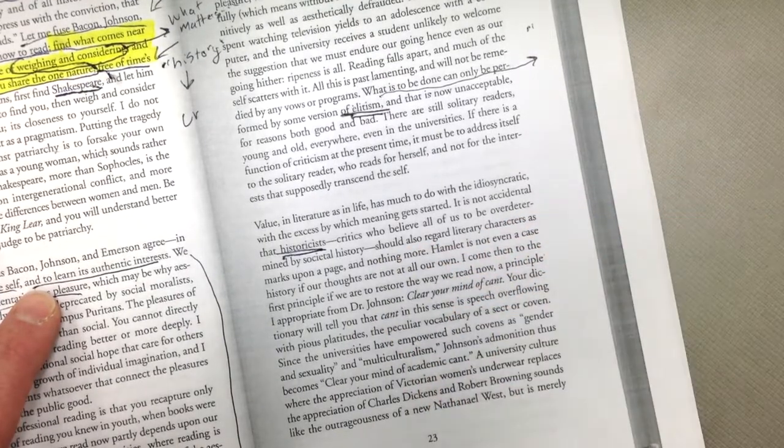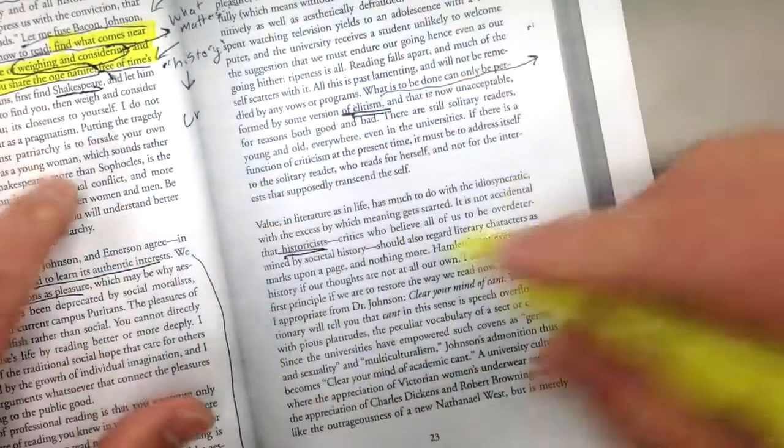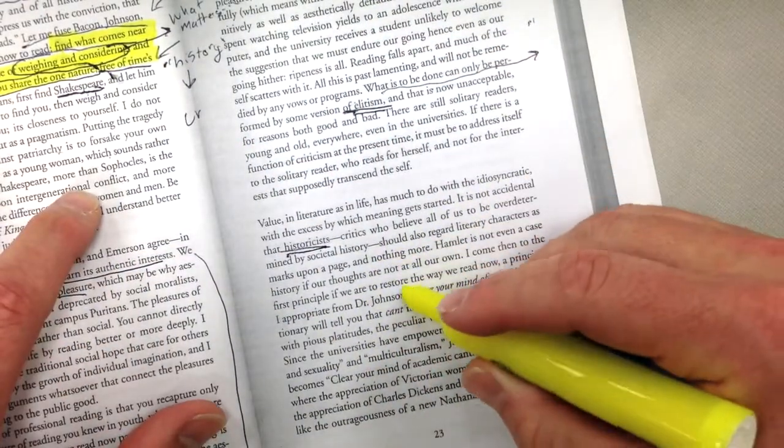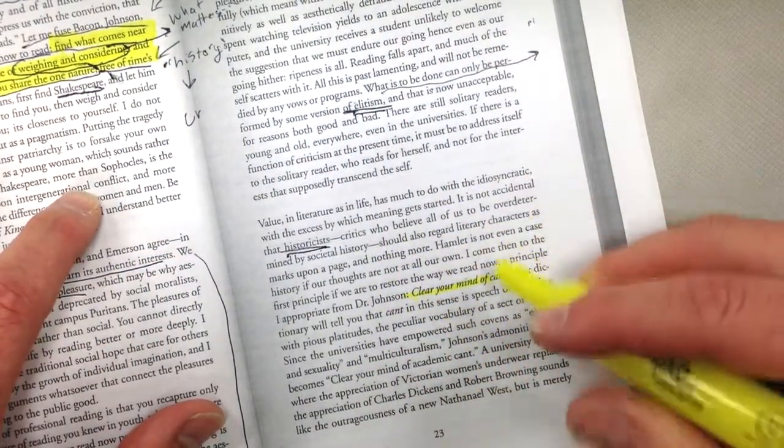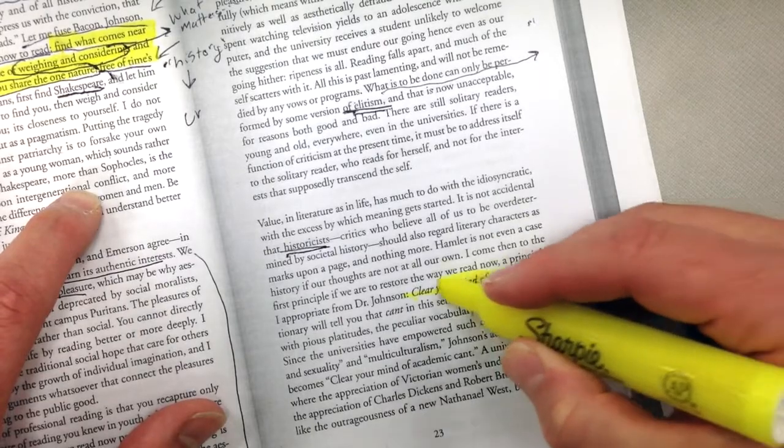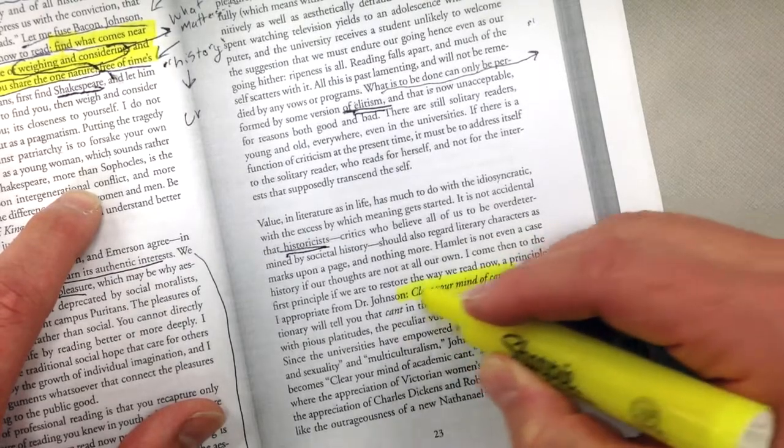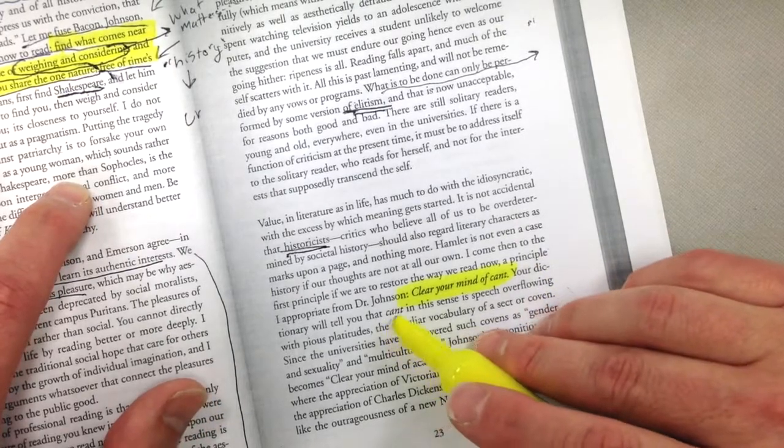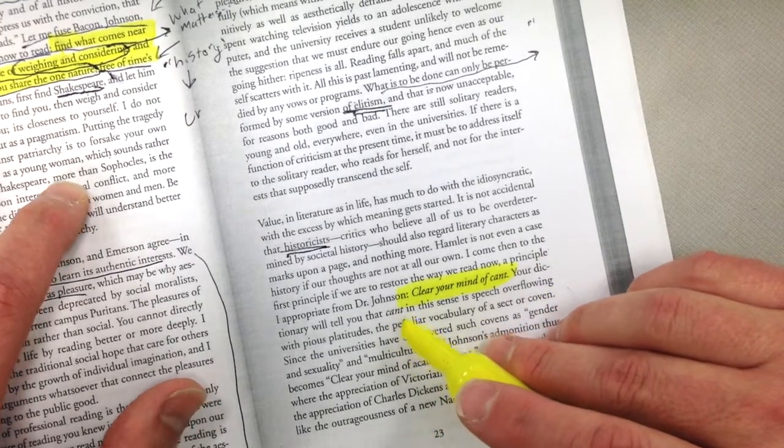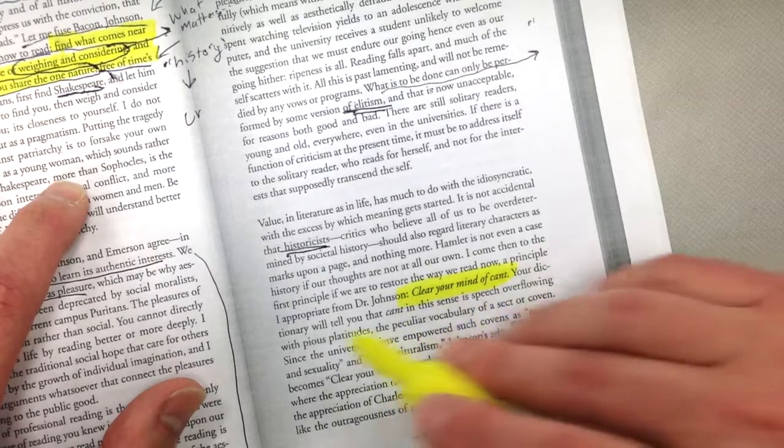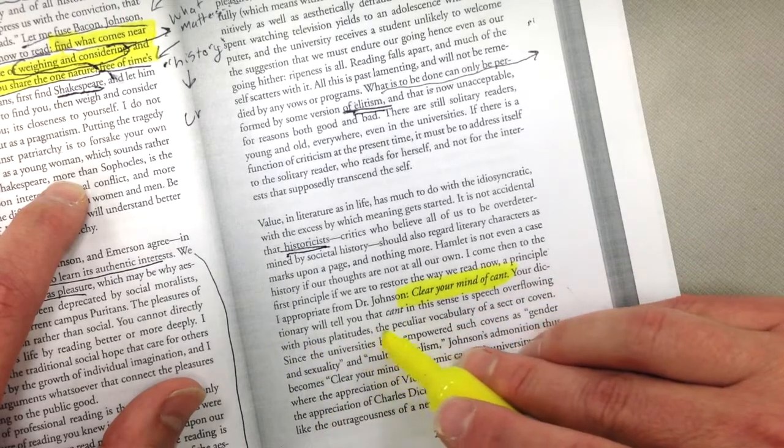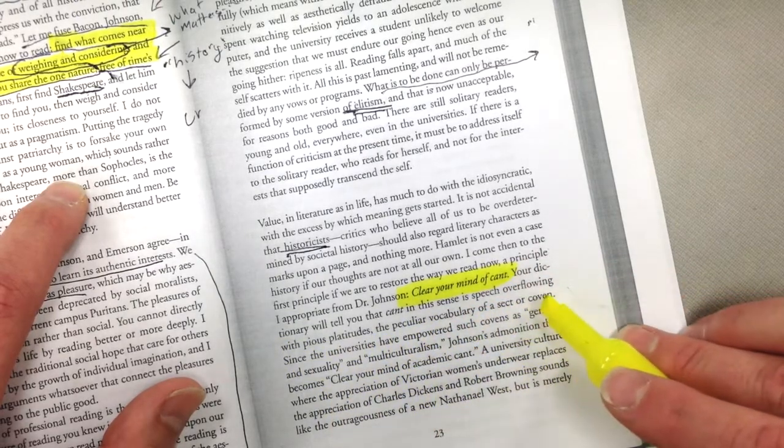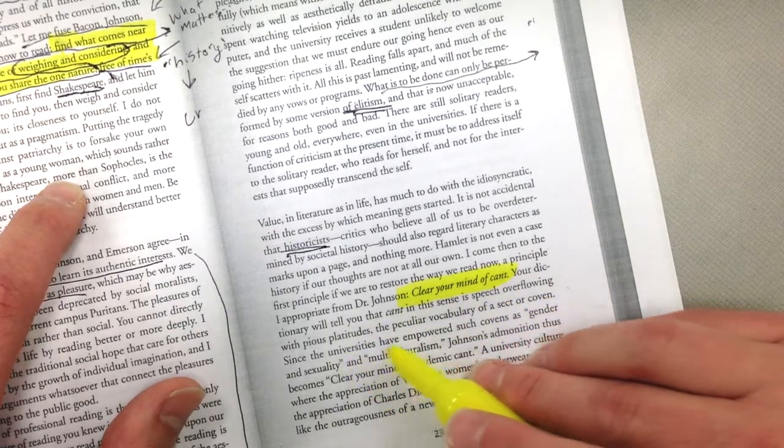Okay. Let's see. So, I'm going to get to this first one, his first rule here, which some of you have written down. And you'll notice here that he says, clear your mind of cant. Cant, cant, and he defines it for you because it's not a word that a lot of people know. Your dictionary will tell you that cant, notice there's no apostrophe here, it's not can not. In this sense, is speech overflowing with pious platitudes, the particular vocabulary of sect or coven.